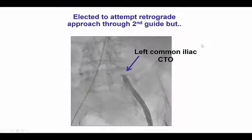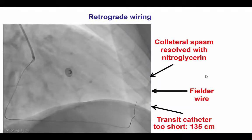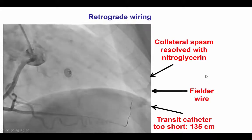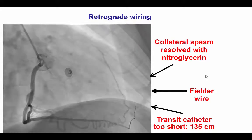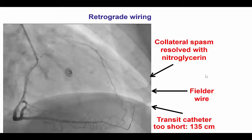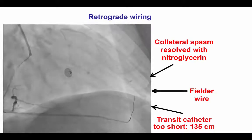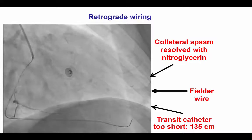We then decided to insert a second guide catheter, but unfortunately we soon found out that the patient had a CTO of his left common iliac artery. So we decided to leave that for now. Of course, now we would just immediately obtain radial access.